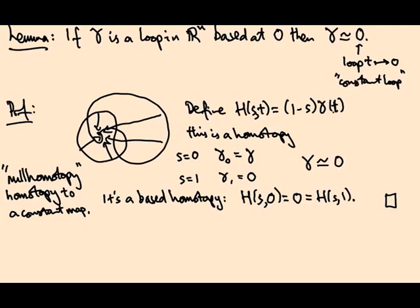So homotopy of loops turns out to give you an equivalence relation on loops, and it will be the based homotopy classes of based loops that's going to turn into our fundamental group.